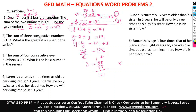Now question two: the sum of three consecutive numbers is 153. What is the greatest number in the series? Consecutive numbers — you continuously add one, like 1, 2, 3, 4. Let the first number be X. Then the second consecutive number is X plus one, and the third consecutive number is X plus two. Their sum equals 153.